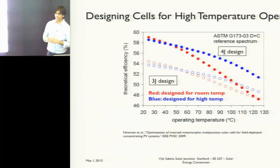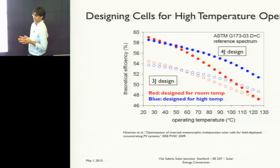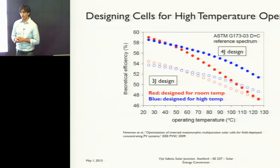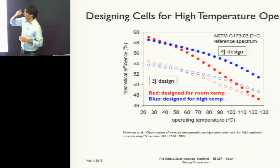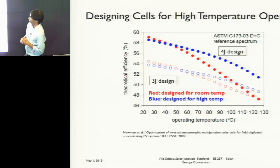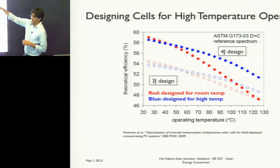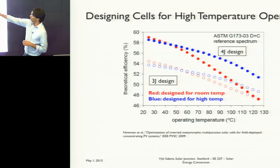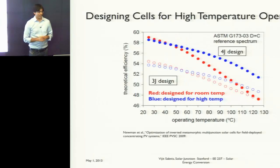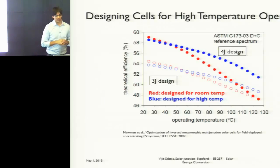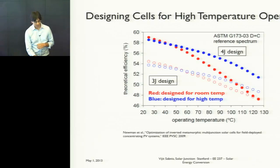You can design a solar cell to operate optimally for high-temperature operation. If you look at this plot for a 4-junction cell versus a 3-junction cell, the red curve is a solar cell designed for maximum efficiency at room temperature versus one designed for high-temperature operation. When you get to 80 to 90 degrees Celsius, you see very significant differences in efficiency.